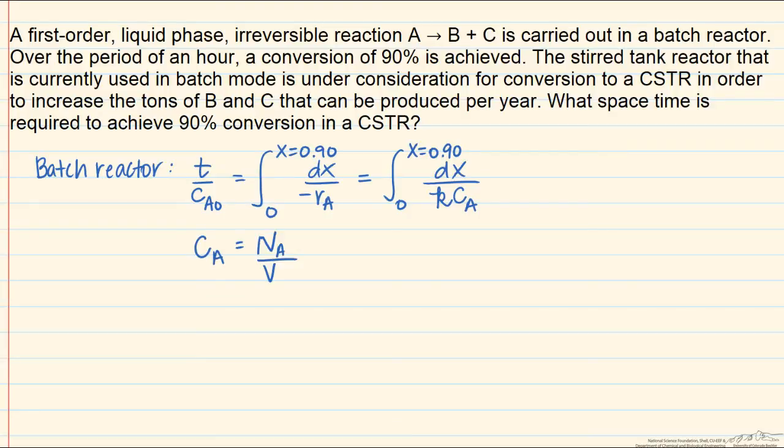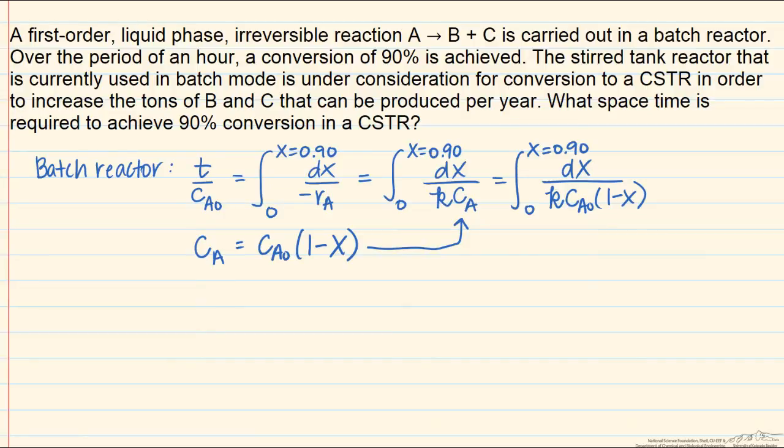Therefore, the concentration of A is equal to the number of moles of A over the reactor volume, which is a constant, and that's equal to the number of moles of A that we start with minus the number of moles of A that are converted through reaction. If we factor out the initial number of moles of A, Na0 from this equation, we'll get Na0 over V, which is equal to Ca0 times 1 minus x, which we can then plug in for the concentration of A.